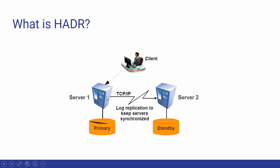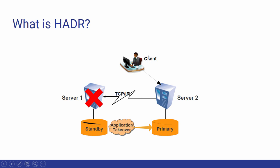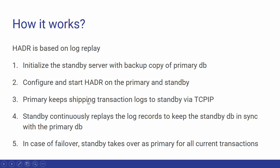As clients execute transactions on server 1, the log files are transferred from the primary to the standby database, and these logs are replayed on the standby so that it always remains in sync with the primary. The goal is for both database servers to have the same copy of the database so that in case of a failure, the client can be rerouted to the second server, which then becomes the primary. This is known as a takeover. Once the failed server becomes available again, it can resynchronize with the standby and things can return to server 1.